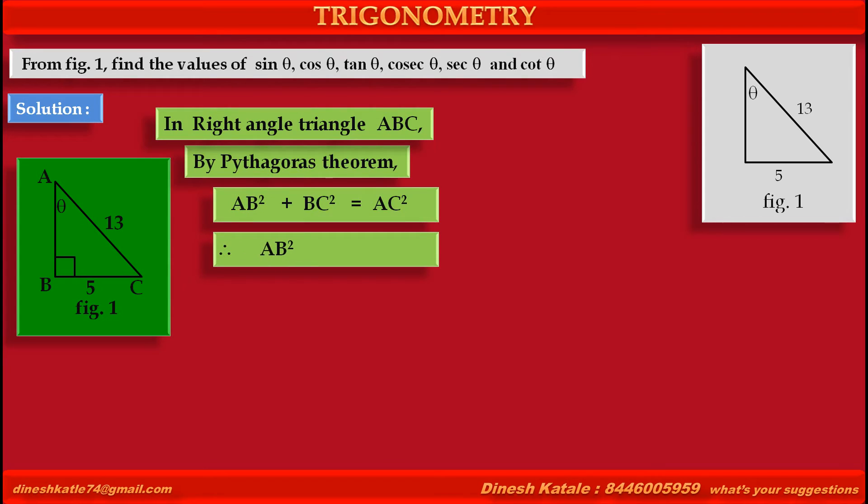Therefore, first term AB square as it is, plus replacing BC by its value, second term is 5 square, is equal to replacing AC by its value, right side become 13 square. Therefore, we get AB square plus 25 is equal to 169.